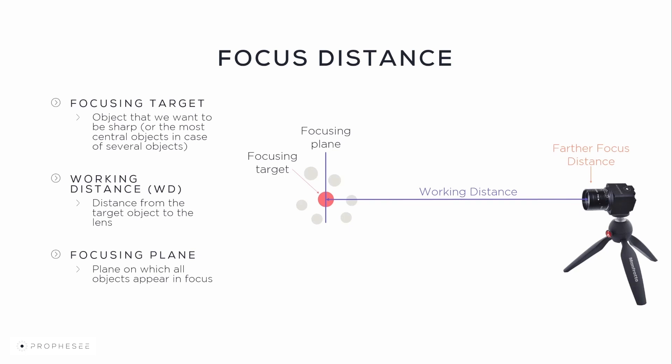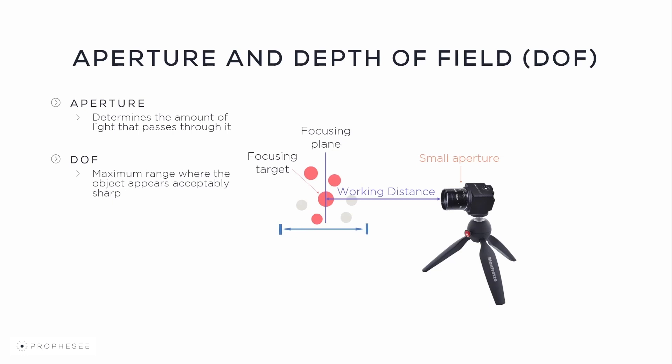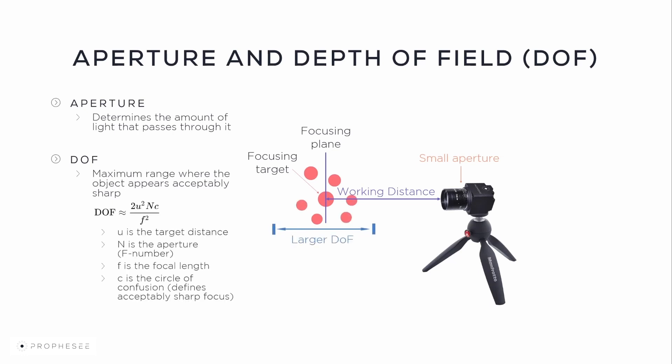Now we're going to see the effect of adjusting the aperture. The aperture determines the amount of light passing to the sensor and also the depth of field. The depth of field is the maximum range where an object appears acceptably sharp. A large aperture opening will give you a small depth of field, and decreasing the aperture to a smaller size will give you a larger depth of field. You can approximate the depth of field using the equation on screen, where U is the target distance, N is the aperture or the F number, F is the focal length of the optic, and C is the circle of confusion that defines the acceptably sharp focus. If your depth of field is very small, you can use this equation to get an approximate value that will simplify the camera focusing. Note that not all lenses allow adjusting the aperture — on some lenses the aperture is fixed, especially on compact lenses.